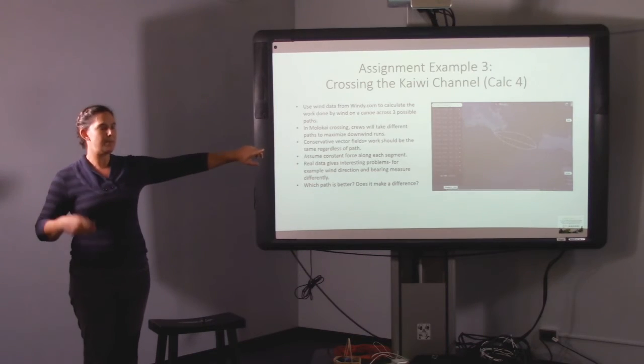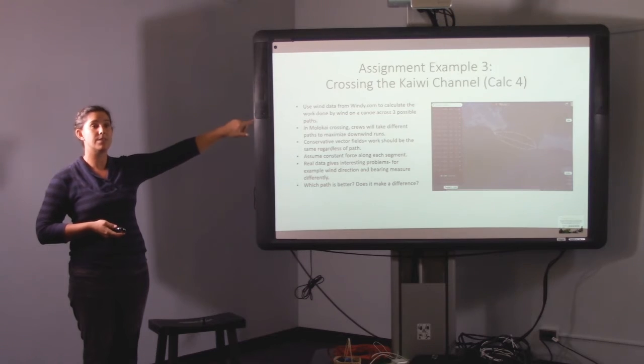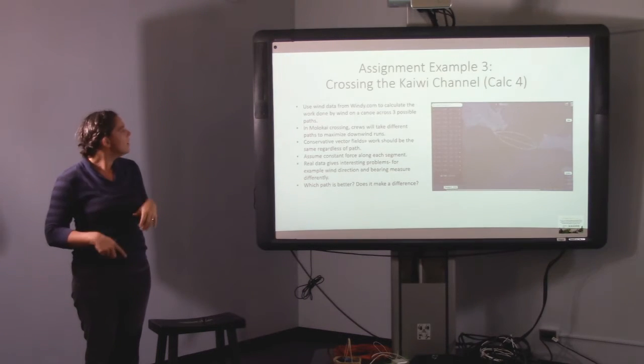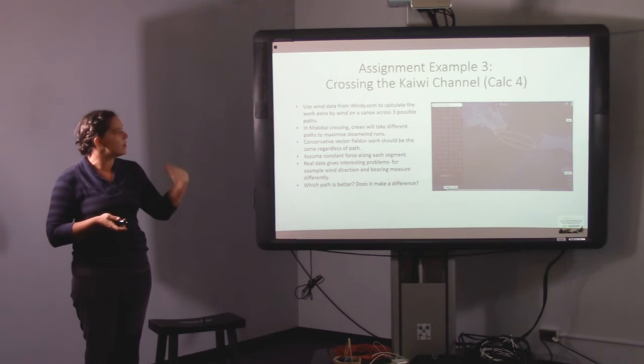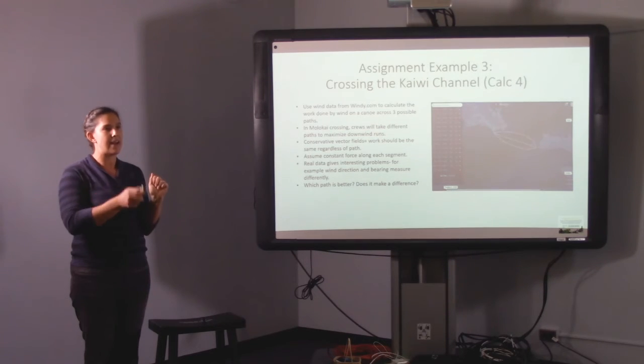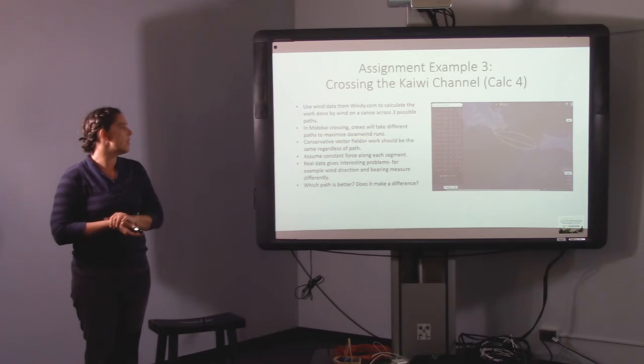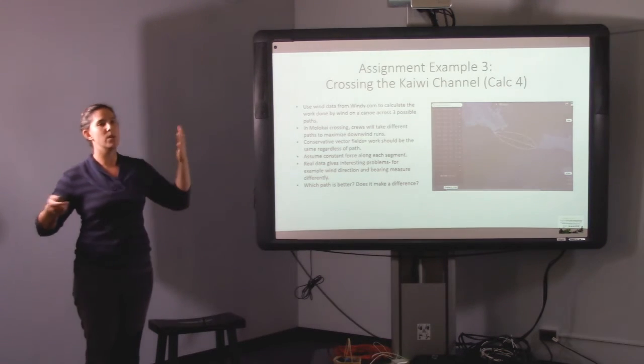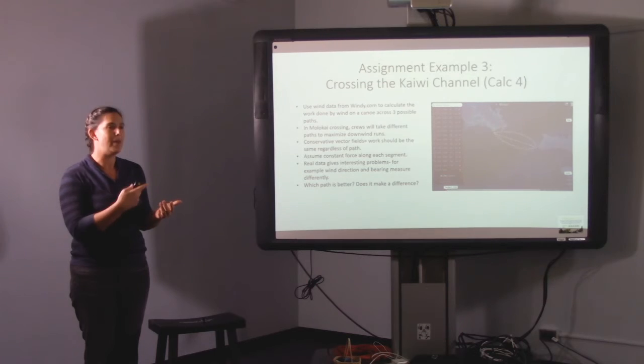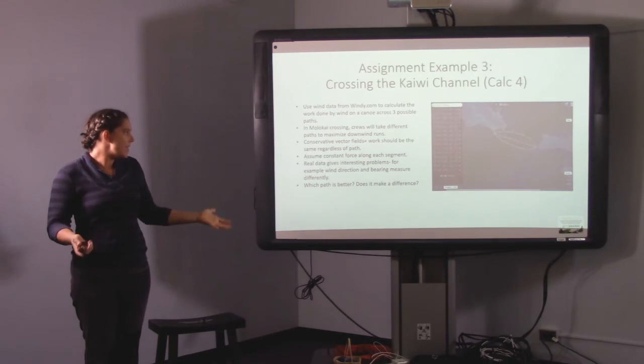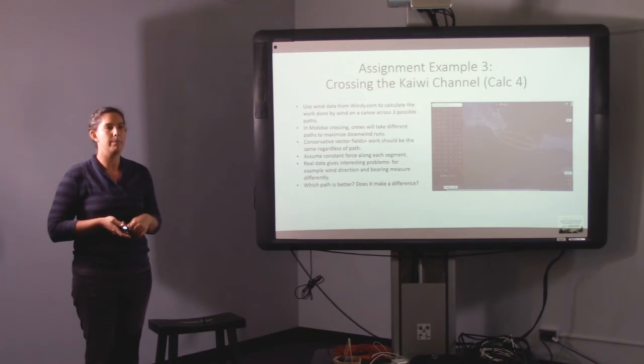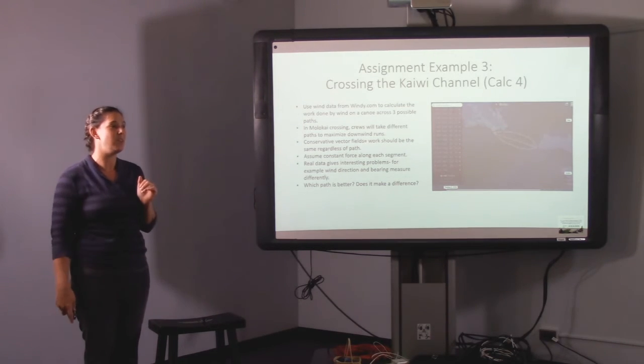So this was an example of a calc 4. Maybe some of you guys know that the Molokai crossing, boats take different routes. And so some people say going up north and coming back down is better than just going straight across because the wind kind of goes with you. So I was using this data from windy.com which is kind of neat and has real time wind data to compute the work across these different paths. And so again, this is one where I didn't identify one assumption. It had all parts of the rubric. So there was interpretation. What does it mean to have positive work? What does it mean to have negative work? Assumptions, you know, what assumptions did we make? And the big one is just, we're assuming it's a constant along each of these legs. And then again, I think what was important is to get them to make a recommendation. Which path is better? And do you think it makes a difference? Would you go a little bit further to get that wind force blowing you down versus going straight?